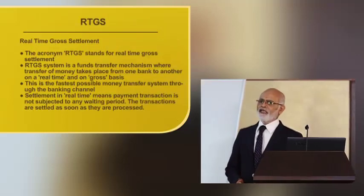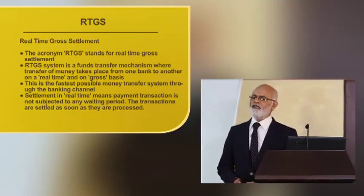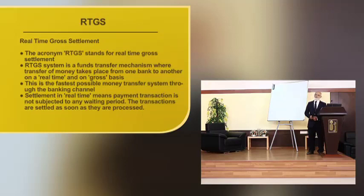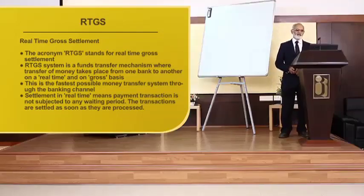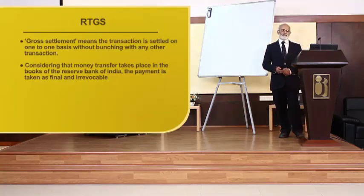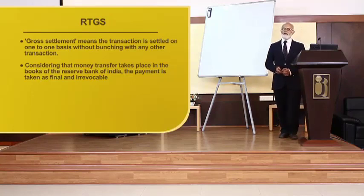RTGS stands for real-time gross settlement, in which funds are transferred from one branch of a bank to another branch across India. These are gross settlements made on the spot — once settled, it is irrevocable. This is the fastest possible money transfer system through the banking channel. Settlement in real-time means payment transactions are not subjected to any waiting period; they are settled as soon as they are processed on a one-to-one basis without bunching or waiting for a batch process.